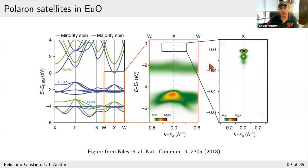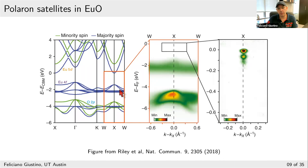One last example: an experiment by a group to which we also contributed theory. They grew rock-salt europium oxide — only stable at low temperature — and doped it with gadolinium. Europium has two valence electrons; gadolinium has three, so gadolinium doping leads to electron doping in the conduction band. In the ARPES measurements you see the main band, the europium f-states, and after zooming into the conduction band, again there is a quasi-particle band, a first satellite, and a second satellite — separated by approximately 60 meV, which is the longitudinal optical phonon energy in europium oxide.